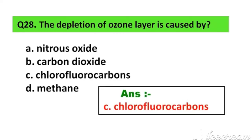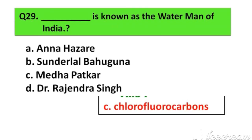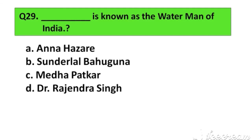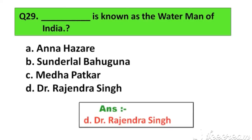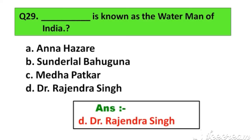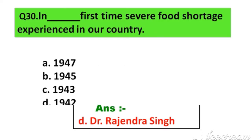Question number 29. Who is known as the water man of India? Option A. Anna Hazare, B. Sundarlal Bahuguna, C. Medha Patkar, D. Dr. Rajendra Singh. The right answer is Option D. Dr. Rajendra Singh.